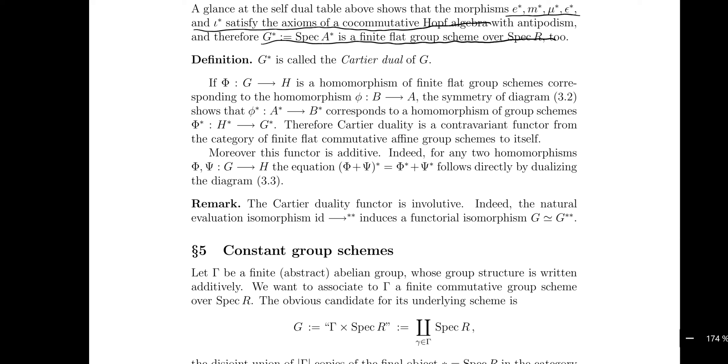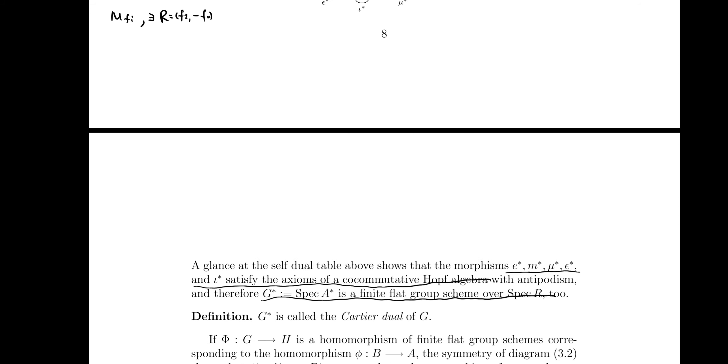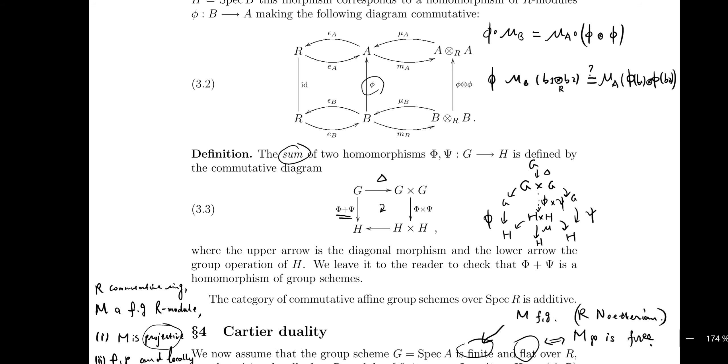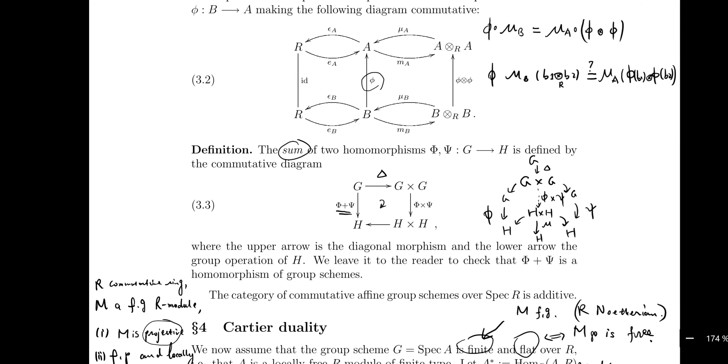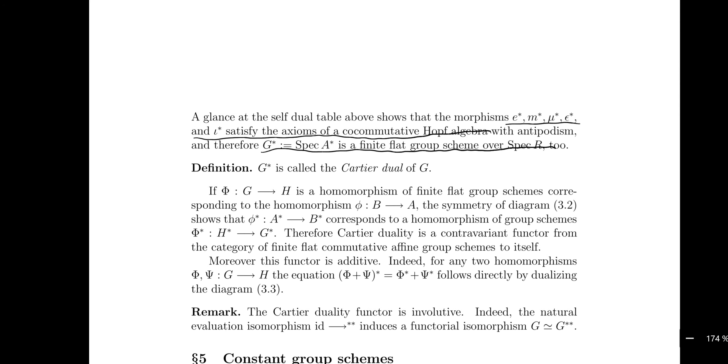Definition: this G* is called the Cartier dual of G. So the dual of this group scheme G is called Cartier dual. And φ is a homomorphism of finite group schemes - G and H are group schemes, φ is a homomorphism of finite group schemes corresponding to homomorphism of rings from B to A. Then we assume it's being dual, section 3.2. You see, this dual will change the direction, and it will still change the direction, but nothing happens - it still works.